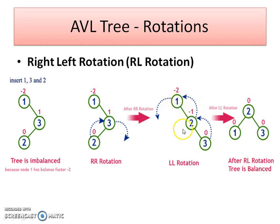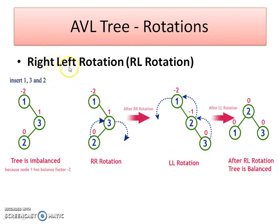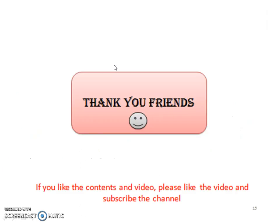After the right rotation, you can see that all the nodes are now in ascending order — the same first case. To make it balanced, we need to perform a single left rotation. After performing the single left rotation, the tree is balanced and all nodes have a balance factor within the required range. So first we perform a right rotation, then a left rotation — that's why this is the double rotation called right-left rotation. Dear friends, thank you for watching. If you like the content and the video, please like the video and subscribe to my channel.